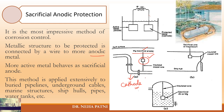Magnesium here becomes the sacrificial anode — it gets corroded, but your metal remains safe. Similarly, sacrificial zinc gets corroded but your metal remains safe. Sacrificial anodic protection works on the principle that you sacrifice another material, making it anodic, and yours becomes cathodic. This method is generally applied to buried pipelines, underground cables, marine structures, ship hulls, pipes, water tanks, etc.